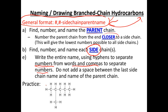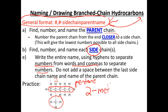Our first practice problem: we look through to find our parent chain — the longest chain. We've got one, two, three, four, five carbons, so we have pentane. We have one carbon chain branching off the second carbon of pentane. So it's 2- (separated with a dash), methyl group for the one carbon, and then the parent chain pentane. Two-methylpentane is our first compound to name.